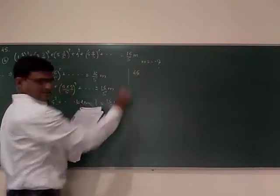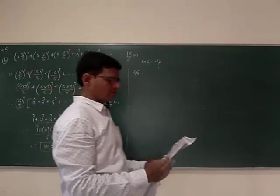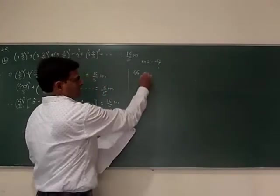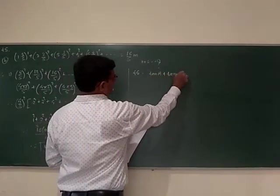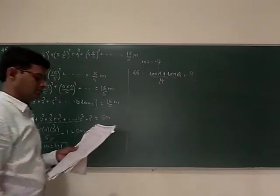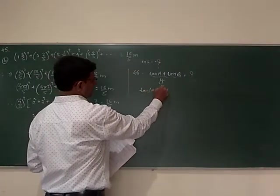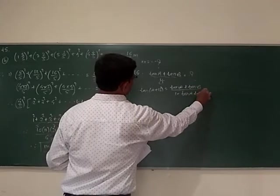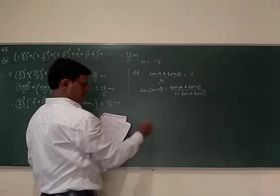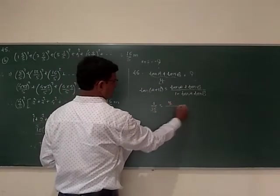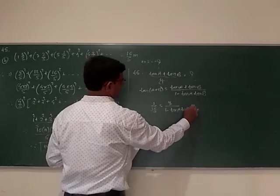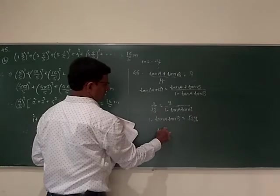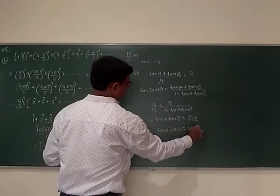Question number 46: a greater than 0, b greater than 0, a plus b equals pi by 6. Find minimum value of tan a plus tan b. Using the formula tan(a plus b) equals tan a plus tan b upon 1 minus tan a tan b, we get 1 upon root 3 equals y upon 1 minus tan a tan b.